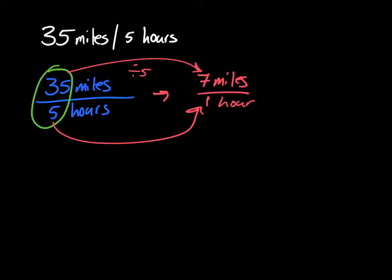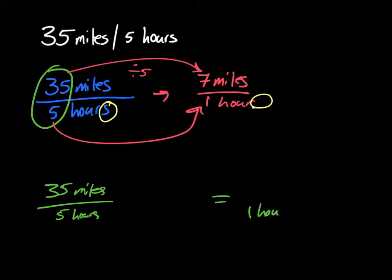When you're looking at this, also notice that hours changes to hour. Another way you could look at it is if you have your 35 miles over 5 hours, you can use that giant 1, knowing that you want 1 hour at the end. And how do you get from 5 to 1?